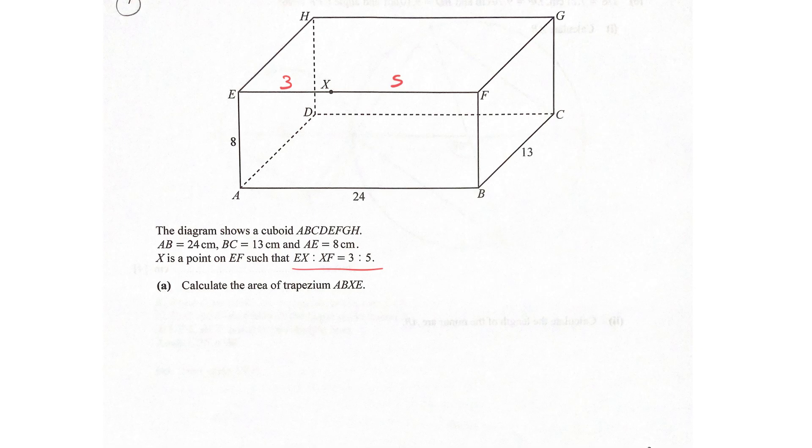Now first one, calculate the area of ABXE. So if I use my highlighter, this is a 3D diagram. It's talking about this plane, A to B, X, E.